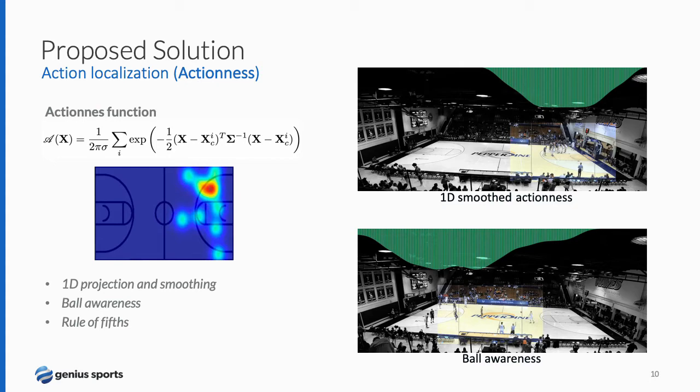To localize the main action of the game, we define an action function to model the distribution of players in the court. Our assumption is that the main action of the game is more likely to happen where the density of players is higher. We define the action as a two-dimensional function that models players as 2D Gaussians in the court. We then project and smooth the action function on the horizontal axis and compute its maximum. This value defines the center of the framing. In order to always include the ball, we use a rule of fifths and ensure that the ball, if detected, is included inside the framing. If not, the action value is corrected to contain the ball.